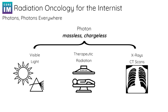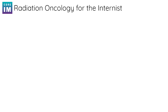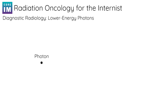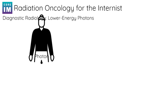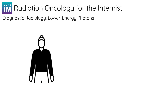What's the difference between the radiation we use for our x-rays and the radiation we use to treat cancer? It's all the same stuff — it's all photons. The only difference is that we use lower energy photons for our x-ray images. As these low energy photons bounce off or pass through the body, they create our x-rays and CT scans.